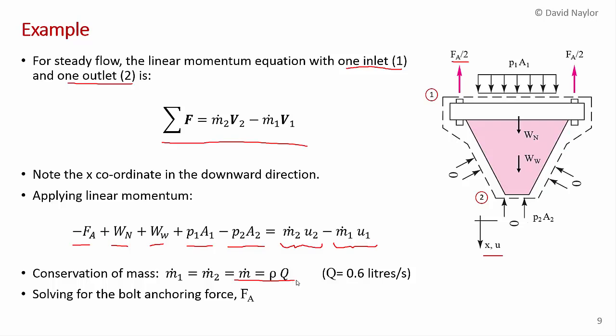That's from conservation of mass. Again, steady flow, no storage term. Mass flow rate in equals mass flow rate out. And you're told in the problem that the flow rate is 0.6 liters per second. And we know the density of water at 20 degrees C. So we can calculate very easily the mass flow rate. So what we're after in this problem is to find the bolt anchoring force, perhaps to do a stress analysis so you can size the bolts appropriately. So solving this equation for FA here.